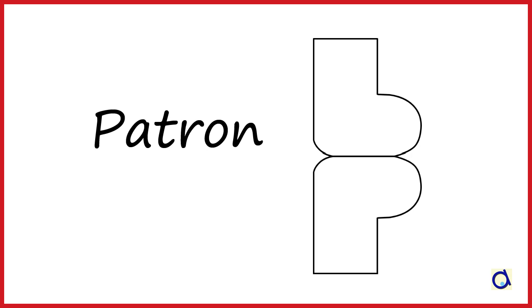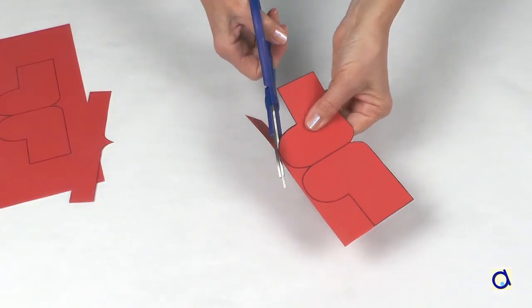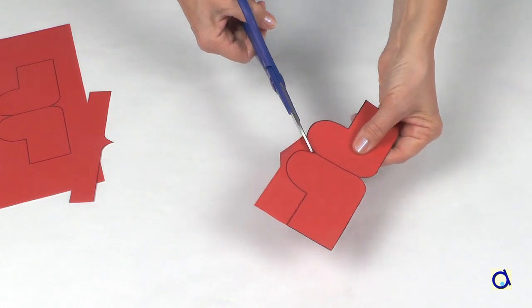You will find the pattern in the supporting document. Print it directly on colored construction paper. Cut out a skate.